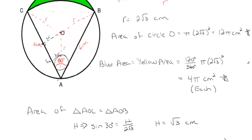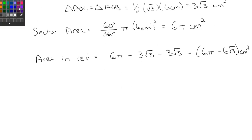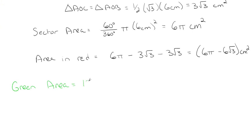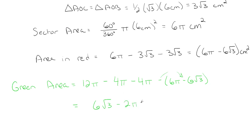Now that we have the red area, the blue and yellow areas, and the overall area of circle O, we just take 12π, subtract off four pi, subtract off four pi, and then subtract off the red area of six pi minus six square roots of three. Be careful here — the minus sign turns that into a plus inside. So we end up with six square roots of three minus two pi centimeters squared as our exact answer. If you want to approximate it, it would be approximately 4.109 centimeters squared as our final answer for the area in green.